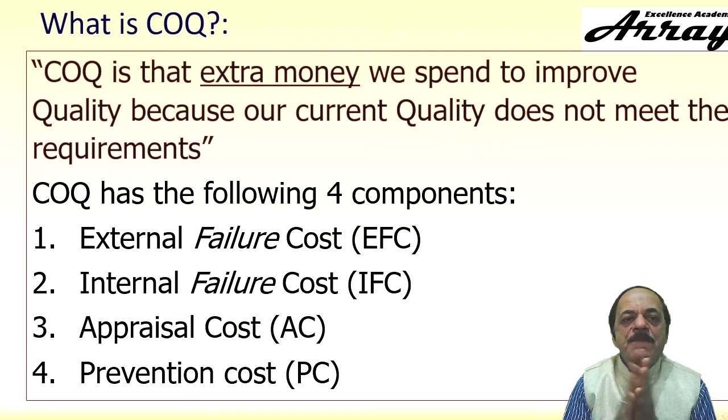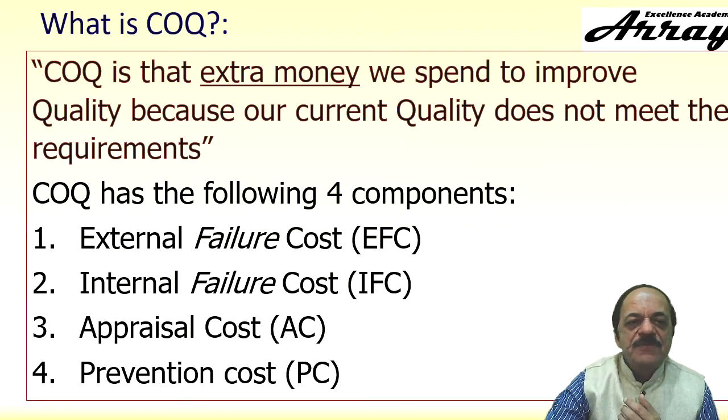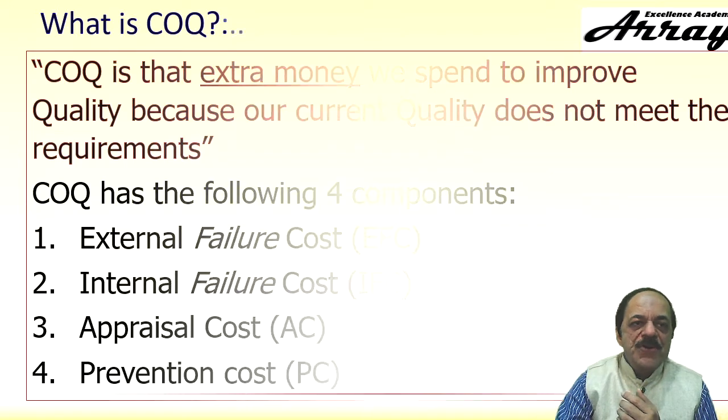So what are the four components? EFC — External Failure Cost, IFC — Internal Failure Cost, AC — Appraisal Cost, and PC — Prevention Cost. Please remember these four components.